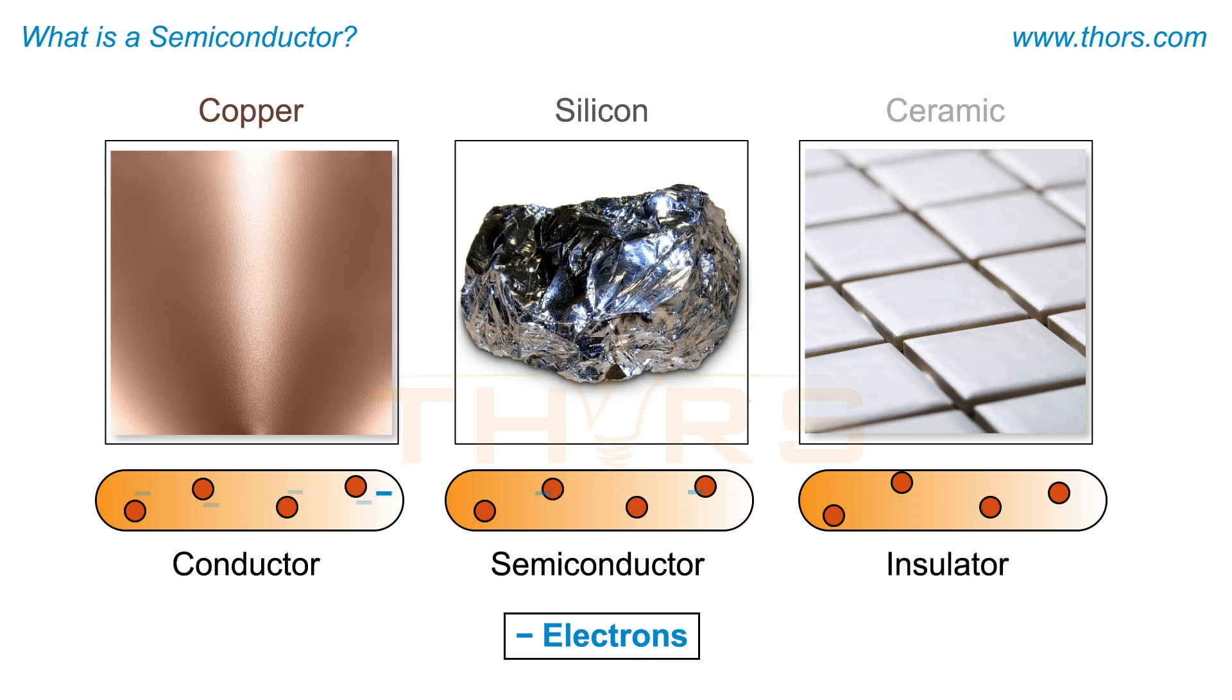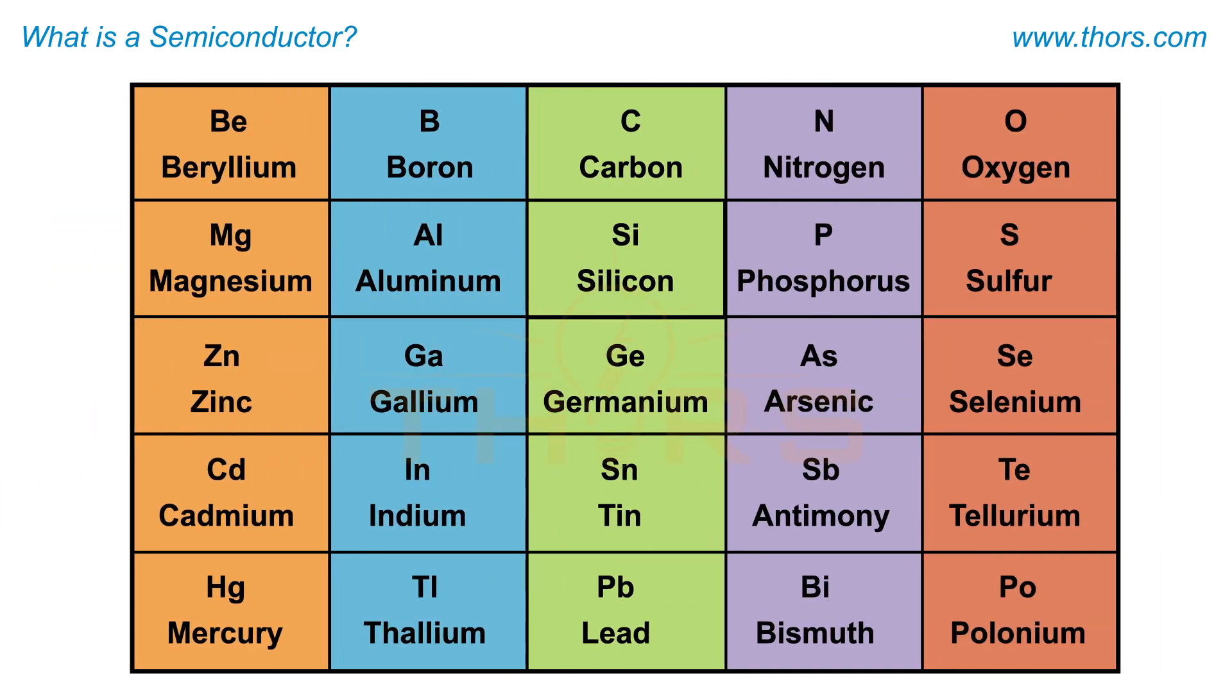But it can also act as an insulator such as ceramic by restricting the flow of current. Common semiconductor materials include silicon, germanium, and gallium arsenide.